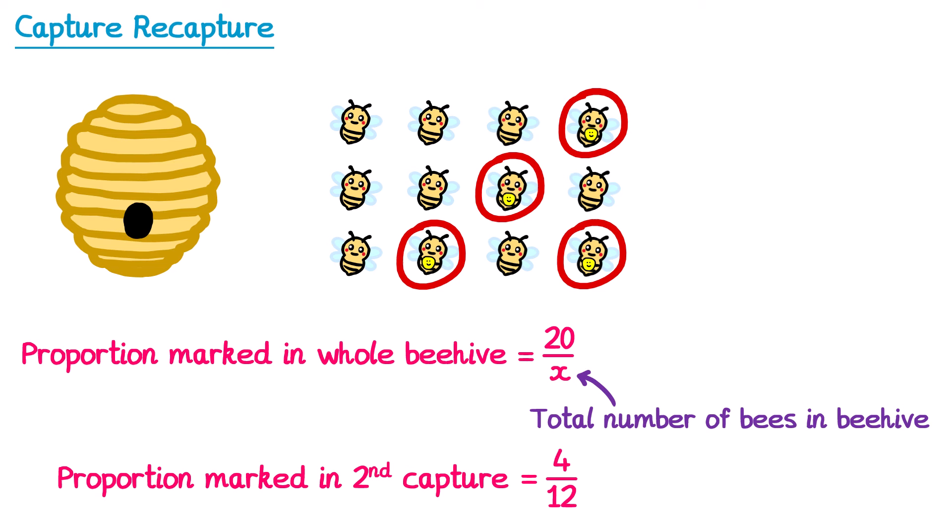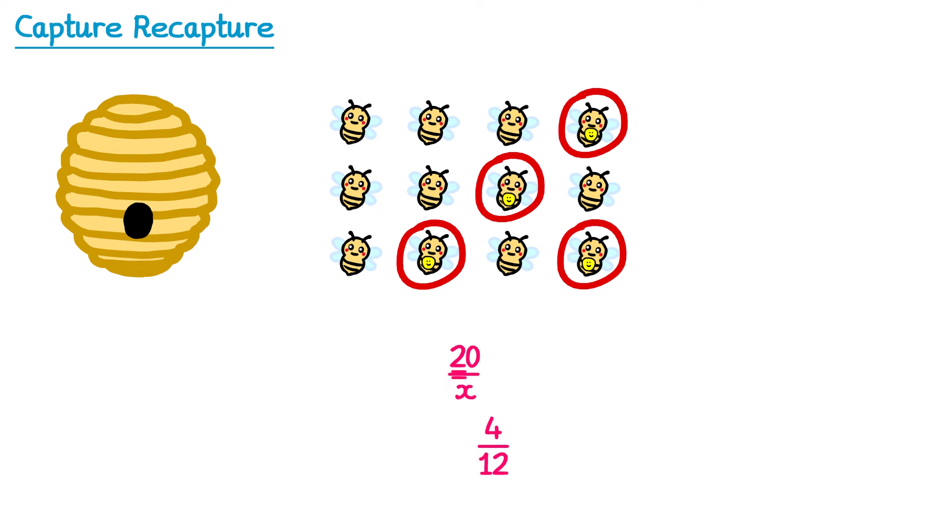It makes sense to assume that the proportion of bees marked in the second capture is the same as the proportion marked in the whole beehive. In which case, 20 over x is the same as 4 over 12. What we now have is an equation to solve to find x, the total number of bees in the beehive.